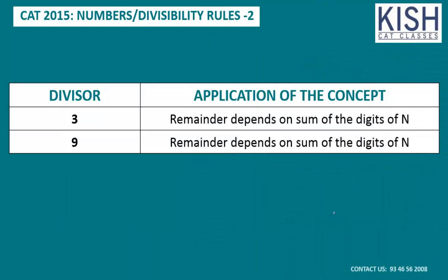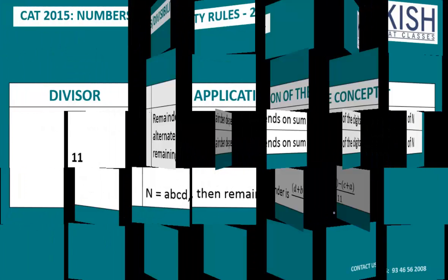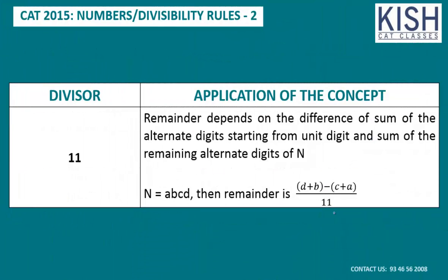Note: the sum-of-digits rule for 9 also applies to 3, since 3 is a factor of 9. For 11: the remainder depends on the difference between the sum of alternate digits starting from the unit digit and the sum of the remaining alternate digits. So if n = abcd, the remainder when divided by 11 is (d + b) − (c + a).